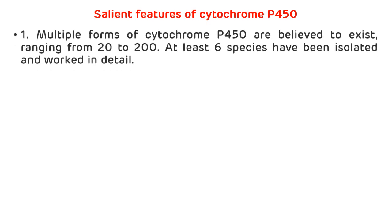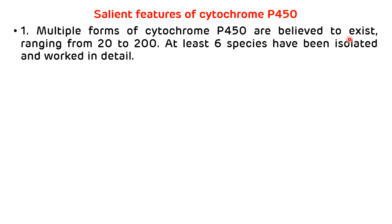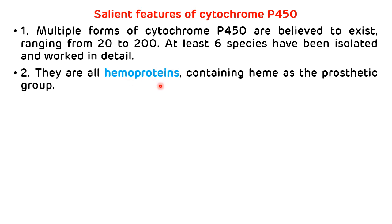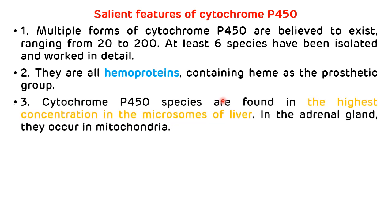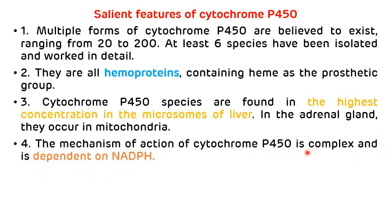Now we will see the various features of cytochrome P450. Multiple forms of cytochrome P450 are believed to exist, ranging from 20 to 200, and at least six species have been isolated and studied in detail. They are all hemoproteins containing heme as a prosthetic group. Cytochrome P450 species are found in highest concentration in microsomes of the liver and are also present in the mitochondria of the adrenal gland. The mechanism of action of cytochrome P450 is complex and it is NADPH dependent.